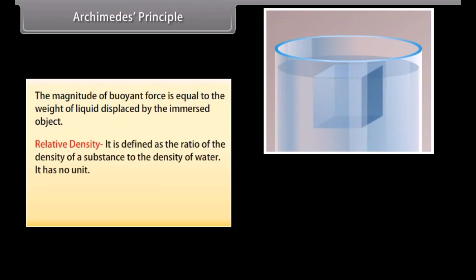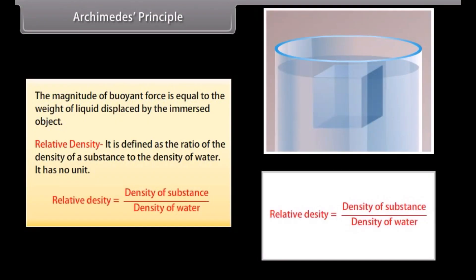Relative density. It is defined as the ratio of the density of a substance to the density of water. Relative density has no unit. Relative density equals density of substance divided by density of water.